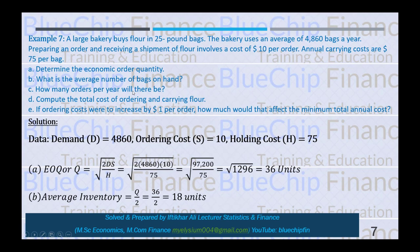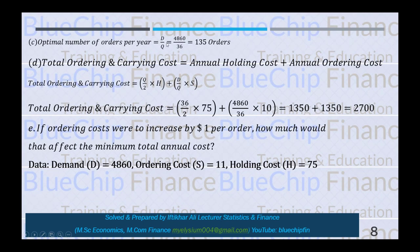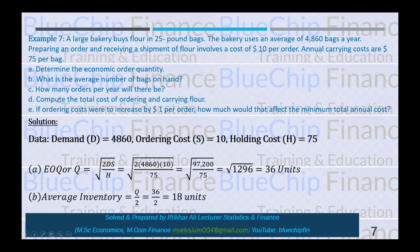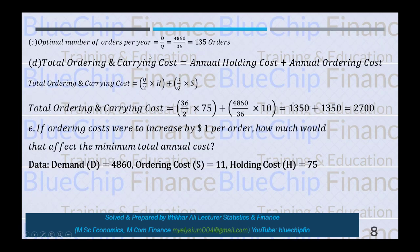How many orders per year will there be? Optimal number of orders = D/Q = 4,860 / 36 = 135 orders per year.